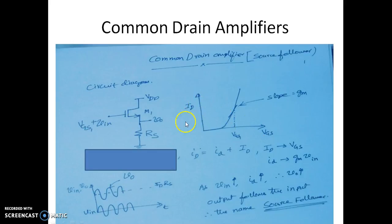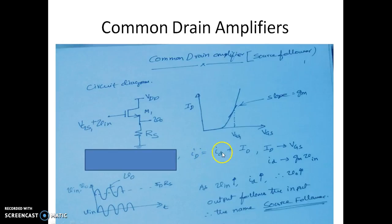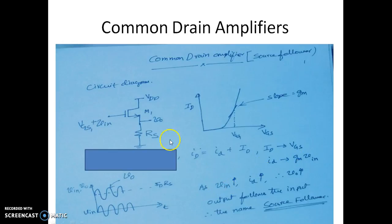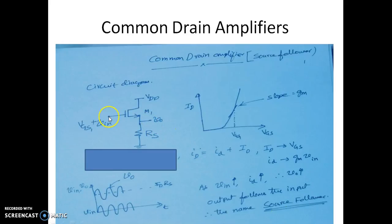Here I have written the transfer characteristics of the MOSFET — ID versus VGS. For a given VGS voltage named VGS1, we have a corresponding ID, and the slope GM is shown on this graph. The total drain current is a combination of the DC bias current ID and the small AC signal current, which is GM into Vin. As Vin increases, the small signal current ID increases, which increases VOUT. Since the output follows the input, this circuit is also called a source follower — the source follows the input signal.